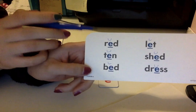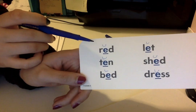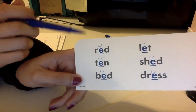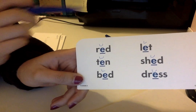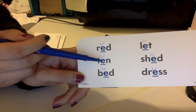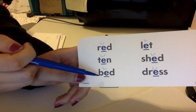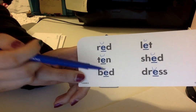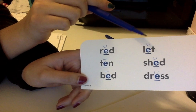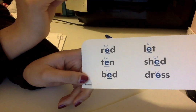Alright, let's begin. Let's read: R-E-D — red. T-E-N — ten. Bed. L-E-T — let.